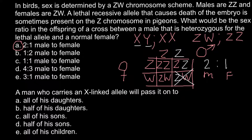A man who carries an X-linked allele will pass it on to... and here are five answers to choose from: all of his daughters, half of his daughters, all of his sons, half of his sons, and all of his children. In order to answer this question, we have to build a Punnett square.